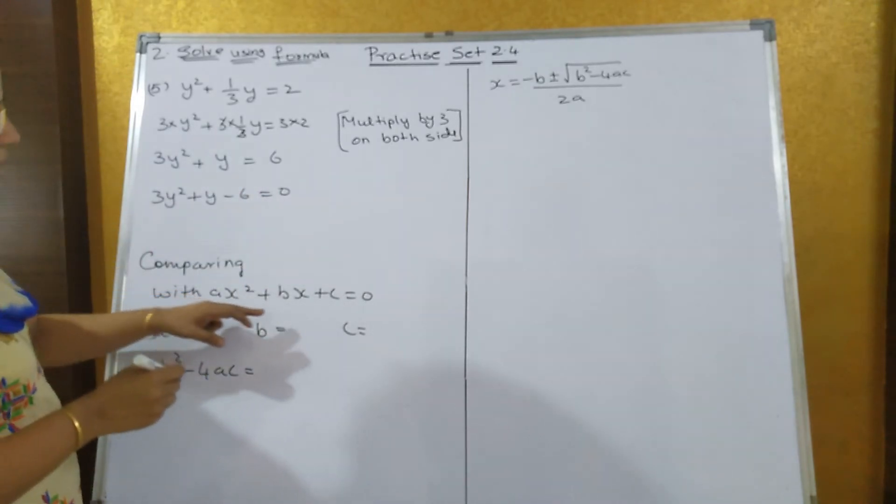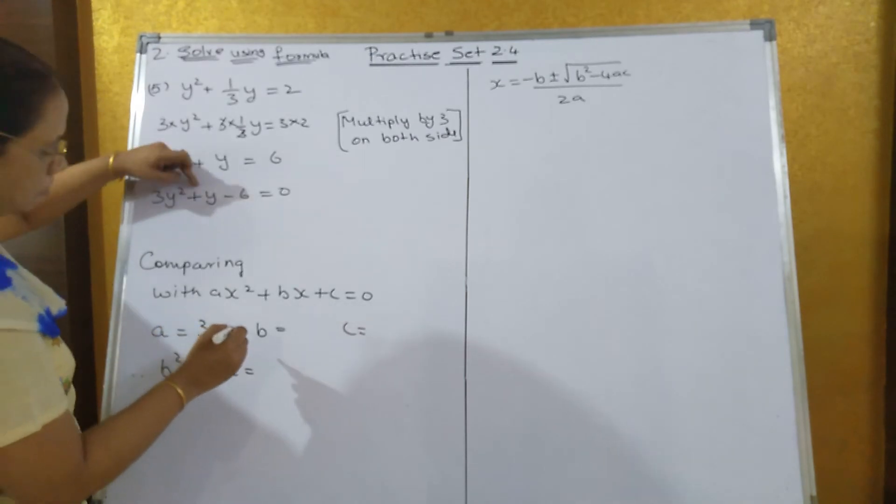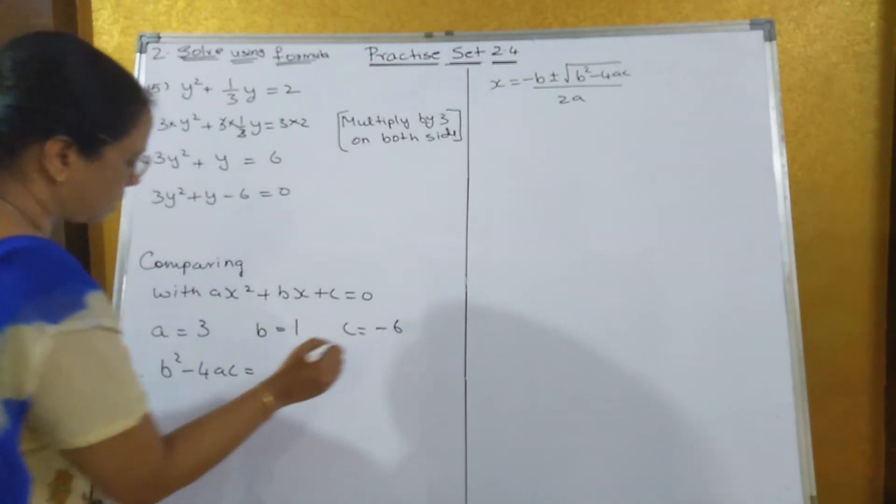Comparing this with ax² + bx + c = 0, a is equal to 3, b is equal to 1, c is equal to -6.